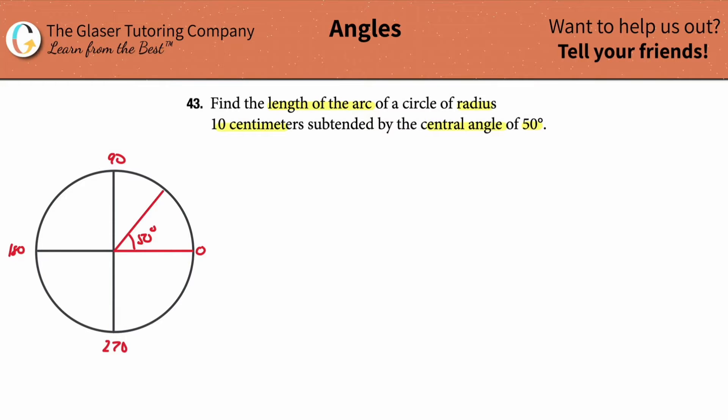Now, what's the radius of that particular circle? Well, they told us in the problem that the radius is 10 centimeters. So that means that this particular length right there is going to be 10 centimeters, the length of that red line.